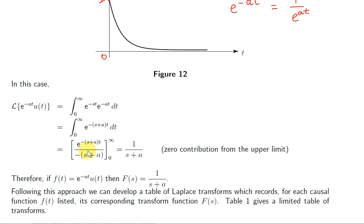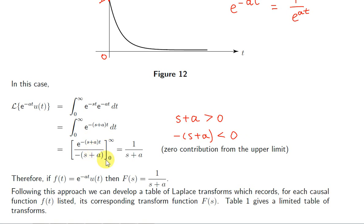Let's look at the upper limit, plus infinity. We take the limit as t tends towards plus infinity. Since s is positive and a is a positive constant, s plus a is positive, which means minus s plus a is negative. Because the power is negative, as t tends towards infinity, e to the power of minus (s plus a) times t will go to 0. For the lower limit, we plug 0 in for t and get e to the power of 0 on top, which is 1. So we get minus 1 over minus s plus a, which gives us 1 over s plus a.